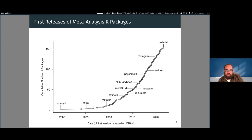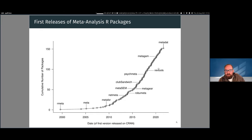This figure shows the date of first release on CRAN of meta-analysis packages over time, and the cumulative number of packages. We have rmeta, then the meta package, metaphor, and more specialized packages like netmeta for network meta-analysis. There are also packages not focused on data analysis but helping with the research synthesis workflow — like metagear and reftools for screening articles — and just a week ago we released metadat, a package of meta-analysis datasets.